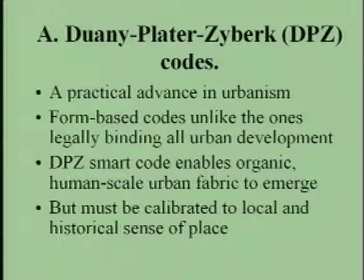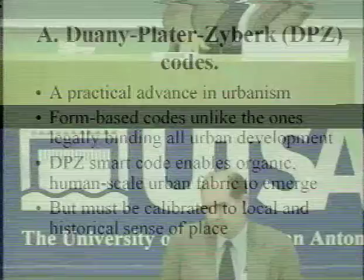Unlike the modernist codes, the DPZ Smart Code — as they call it — enables organic, human-scale urban fabric to emerge. However, the codes must be calibrated to the local historical sense of place. This is not a simplistic universal application like the modernist codes. Before the codes are applied to a city, they must be calibrated — a rather lengthy process. The code must become localized before it can be applied; otherwise it does damage.